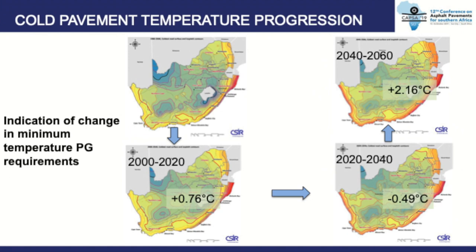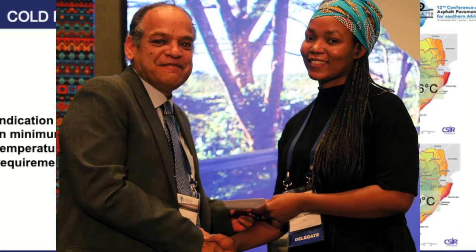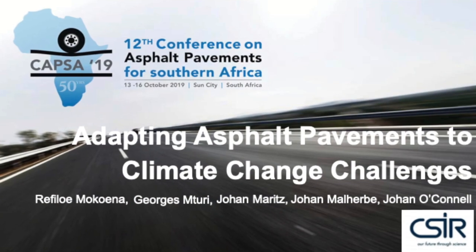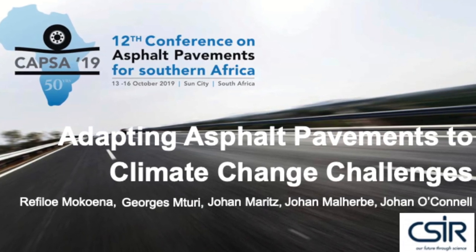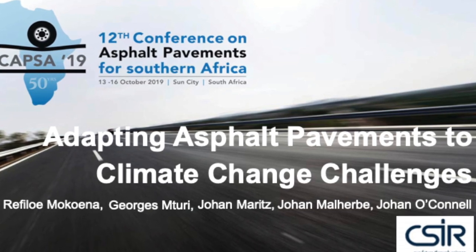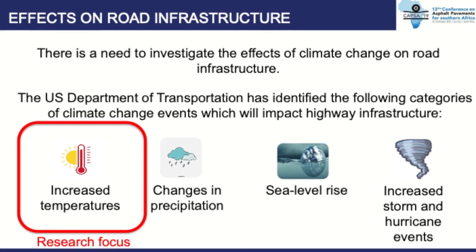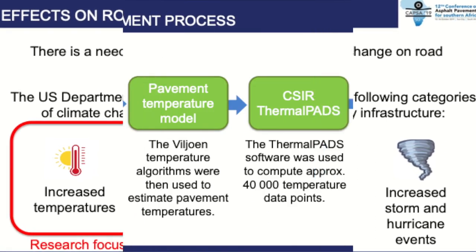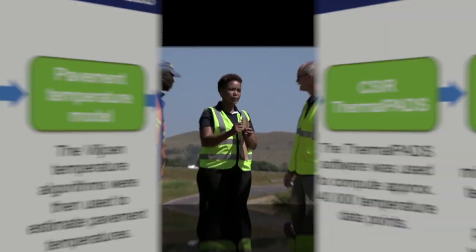Mugwena's methodology and findings earned her the best paper award at the Conference on Asphalt Pavements for Southern Africa in 2019. Titled 'Adapting Asphalt Pavements to Climate Change Challenges,' the paper was co-authored by the CSIR's Georges Mthuri, Johan Maritz, Johan O'Connell, and Dr. Johan Malheber. The research has also helped the Department of Environmental Affairs adopt this approach into their strategic research documents.